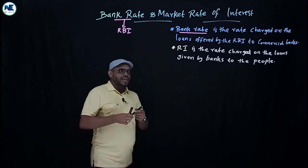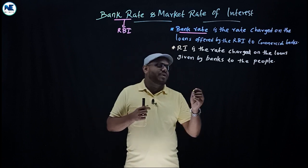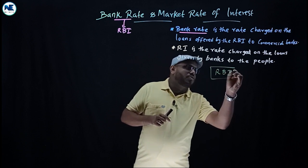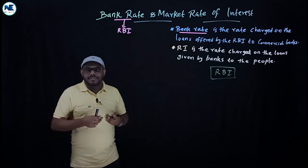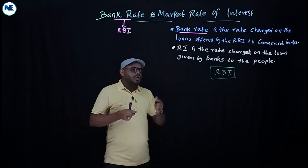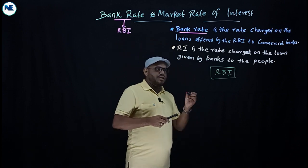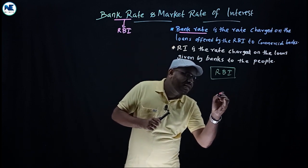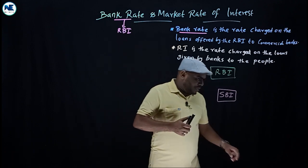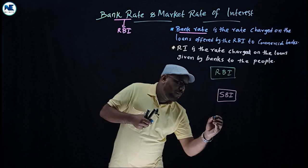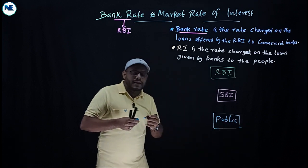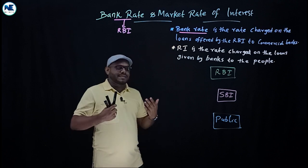Let's look at the hierarchy carefully. The apex bank of the country in the Indian context is RBI — Reserve Bank of India. In America it's the Federal Reserve System, in England it's the Bank of England, in China it's the People's Bank of China. Below RBI, at the middle level, are the commercial banks, for example SBI. At the bottom level is the public — which includes farmers, entrepreneurs, industrialists, exporters, importers, etc.